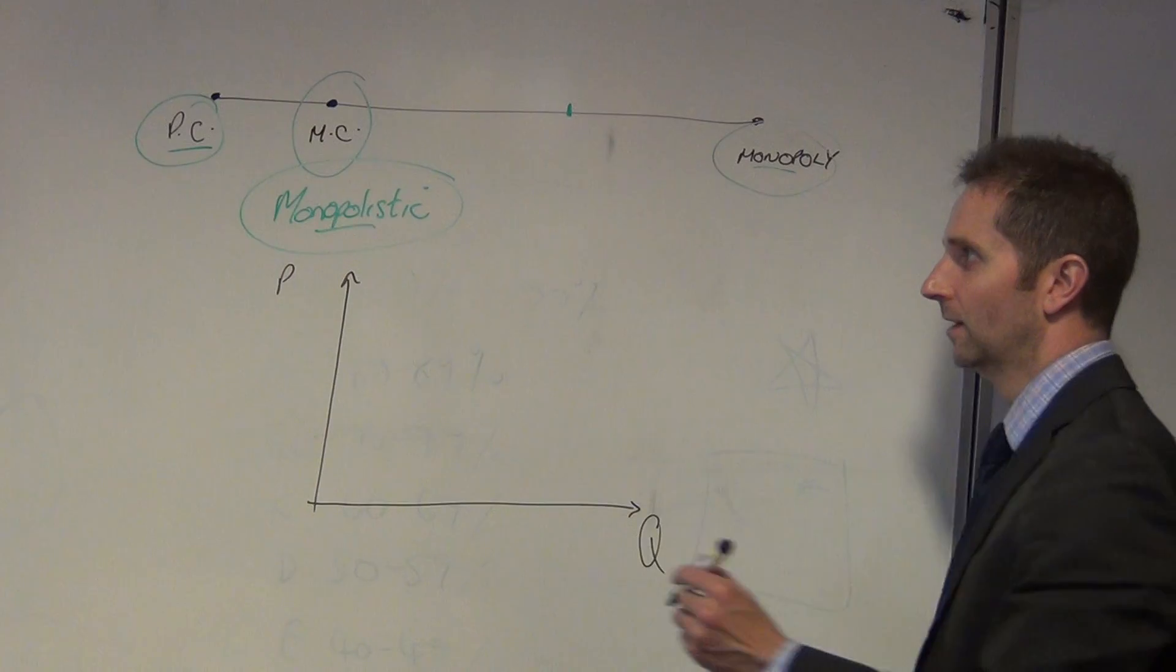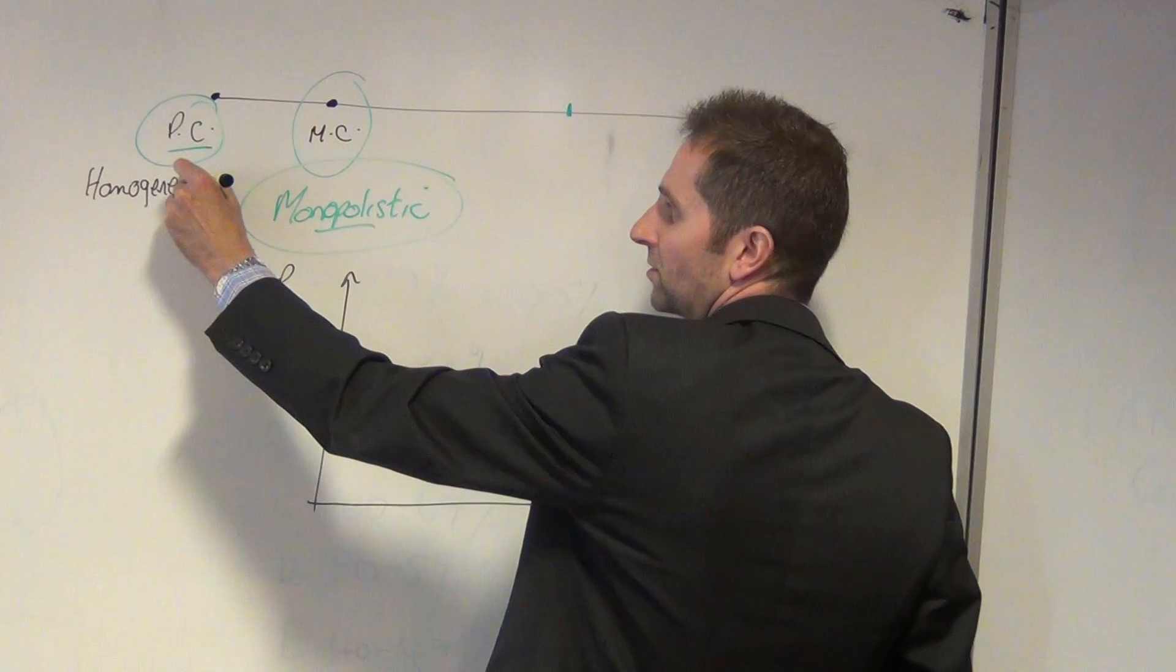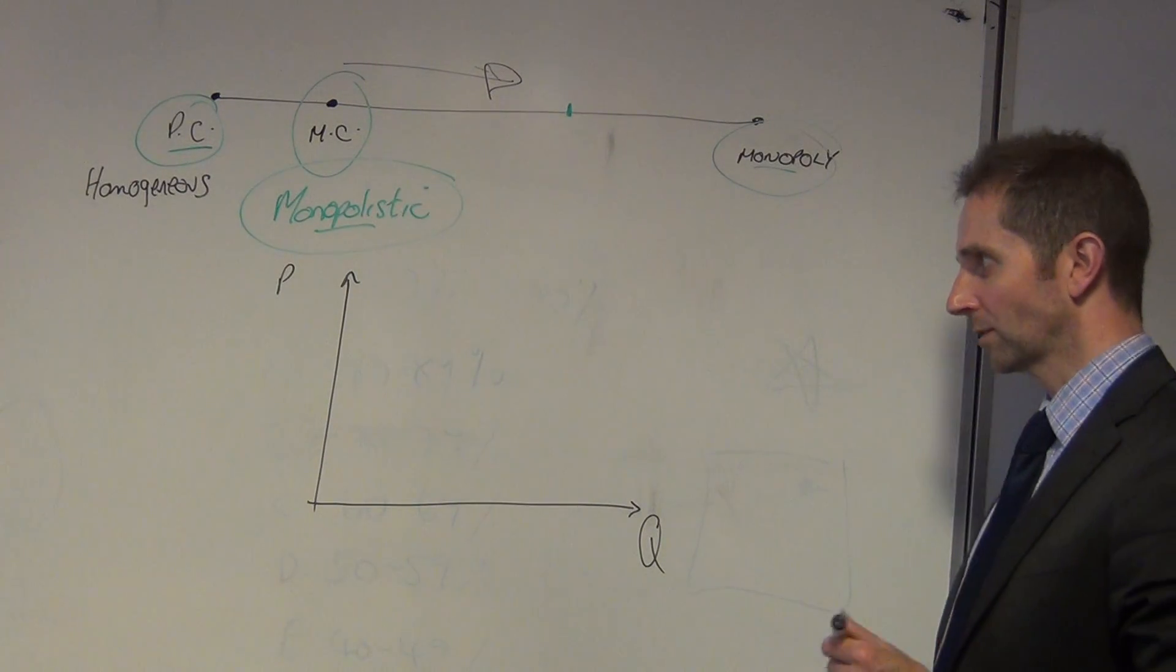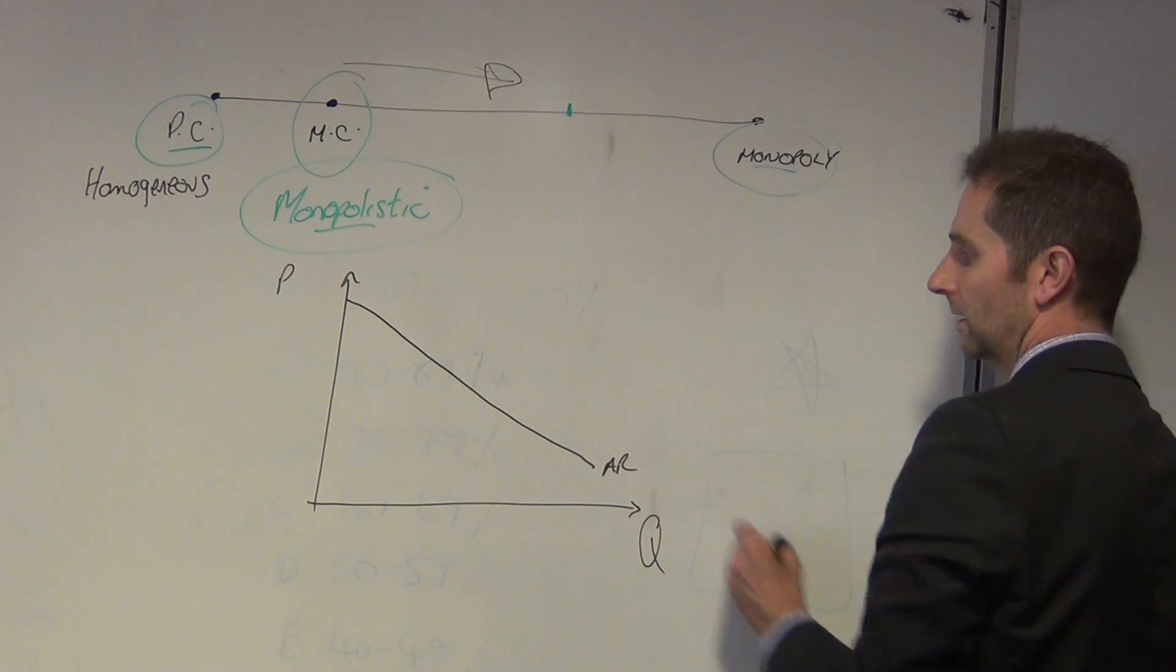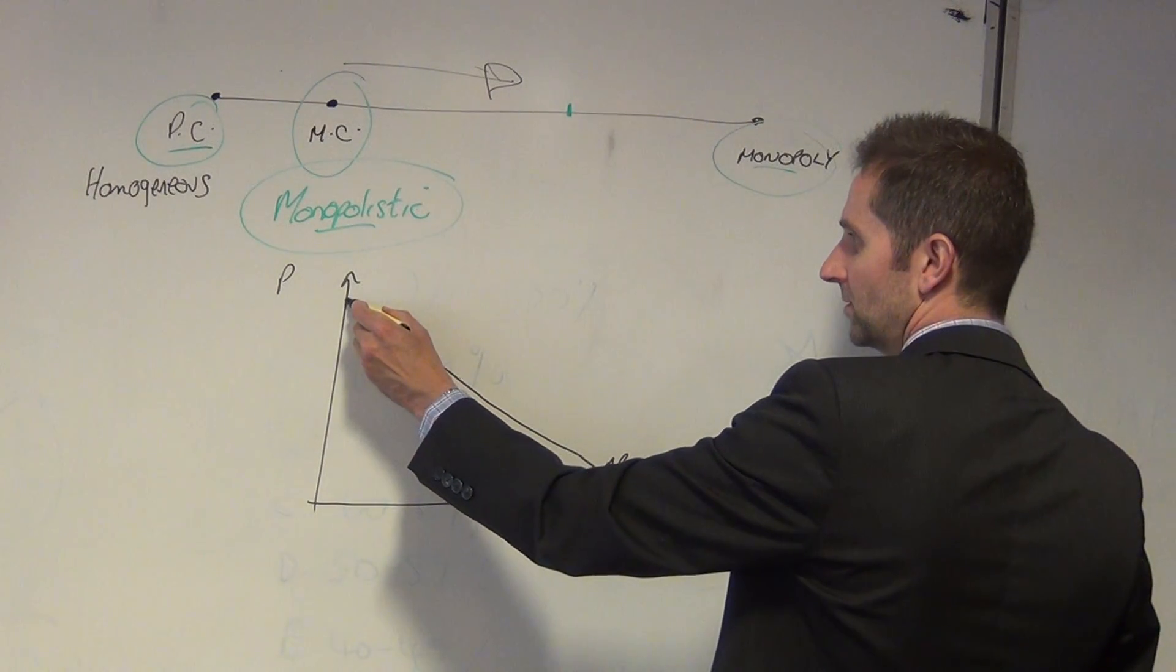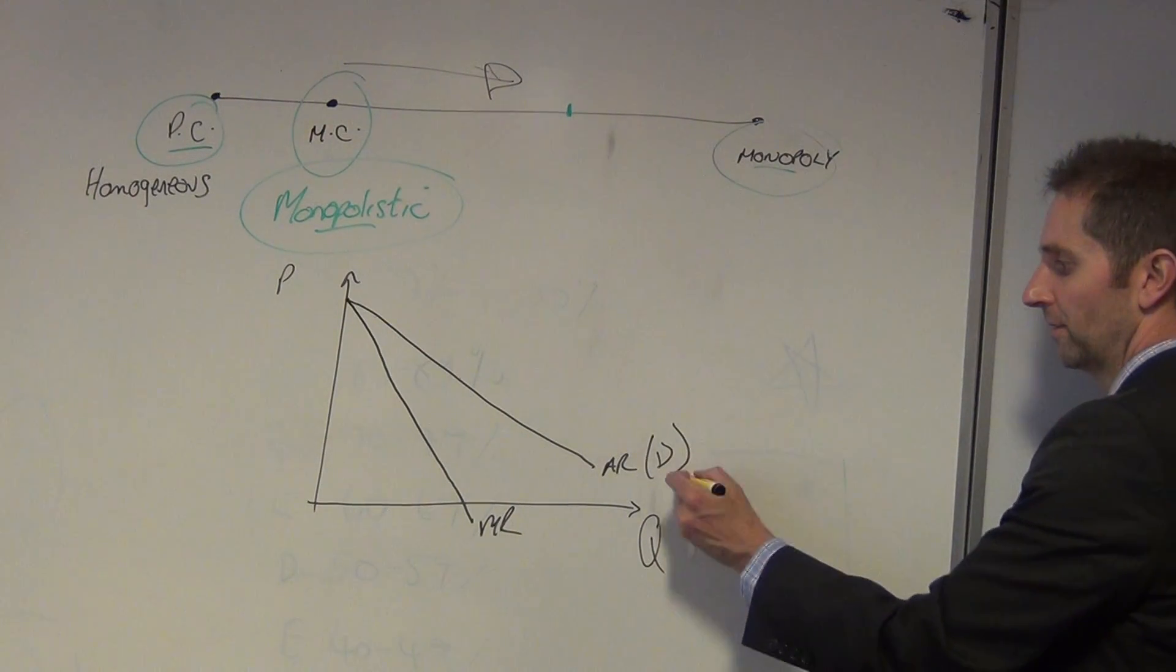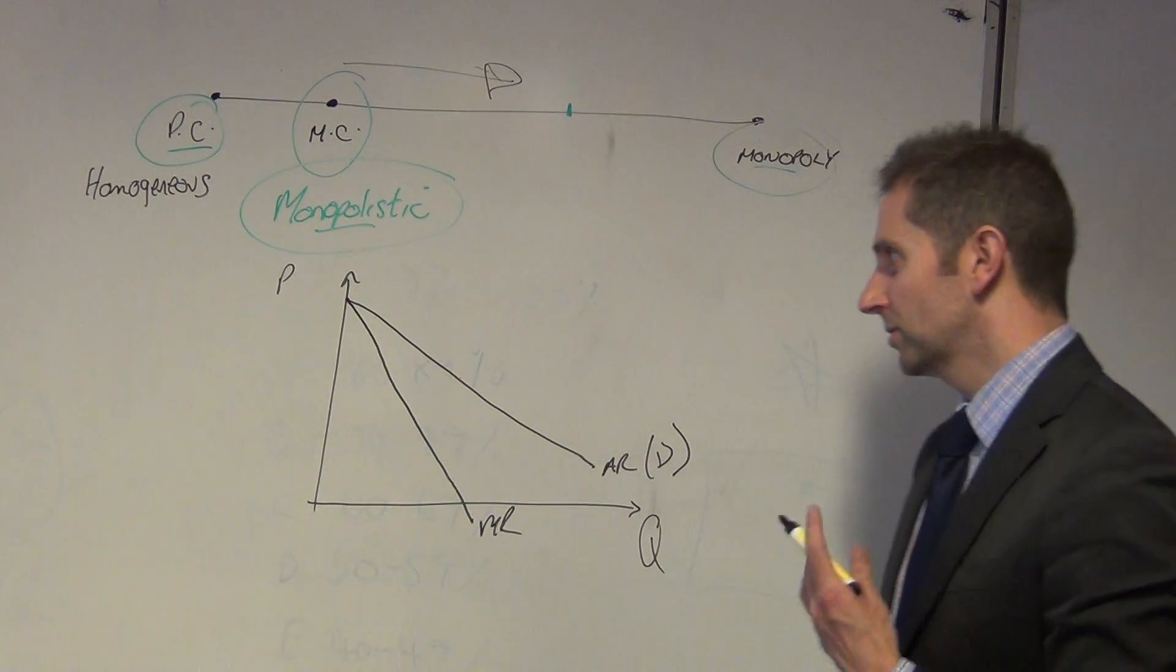Remember that in perfect competition we're talking about homogeneous products, or identical products. And the further we move in this direction, the more differentiation that we tend to get in those products. So our average revenue curve is a relatively flat one, like so. And the marginal revenue curve slopes downwards from left to right and it's beneath the average revenue curve.